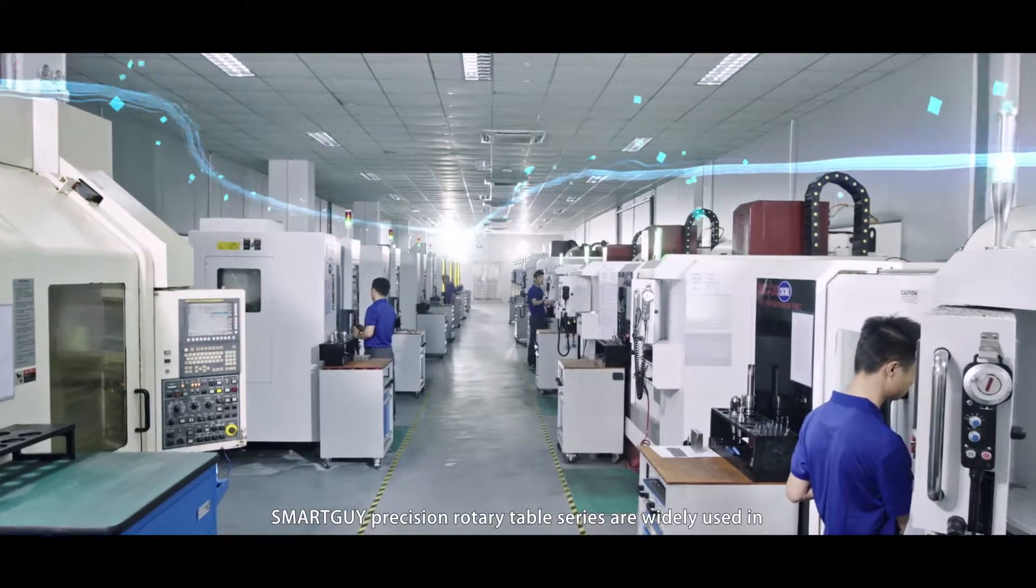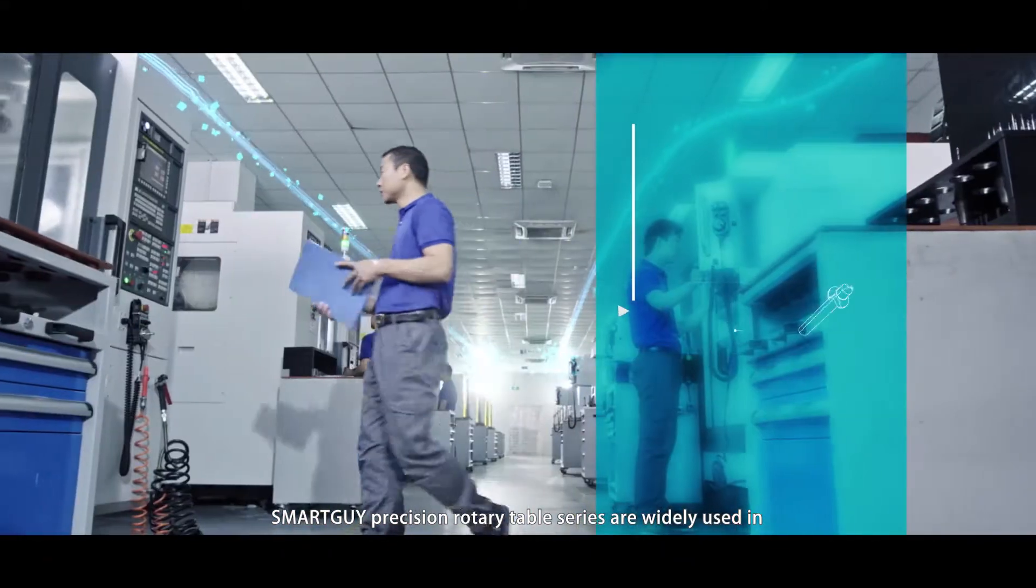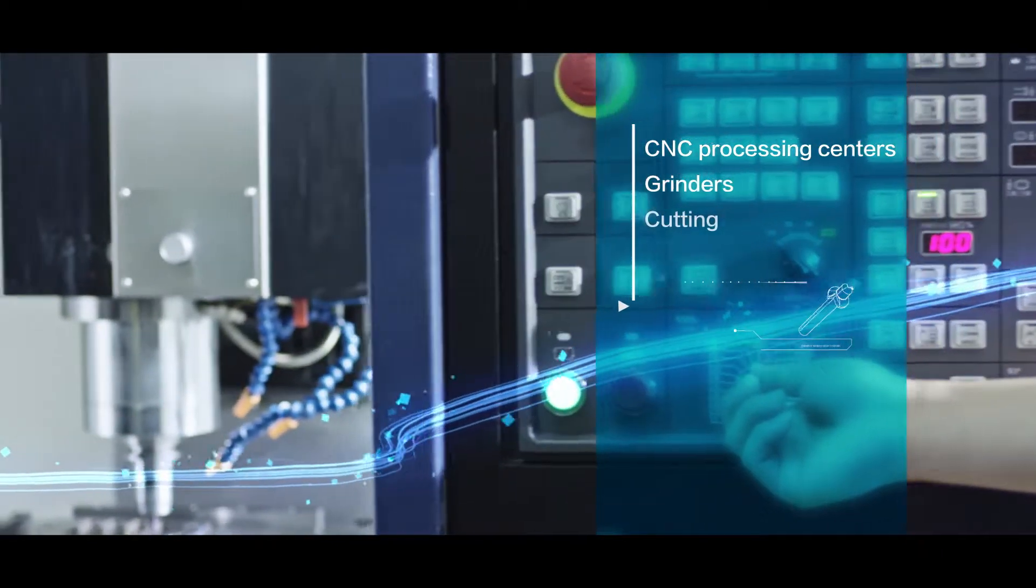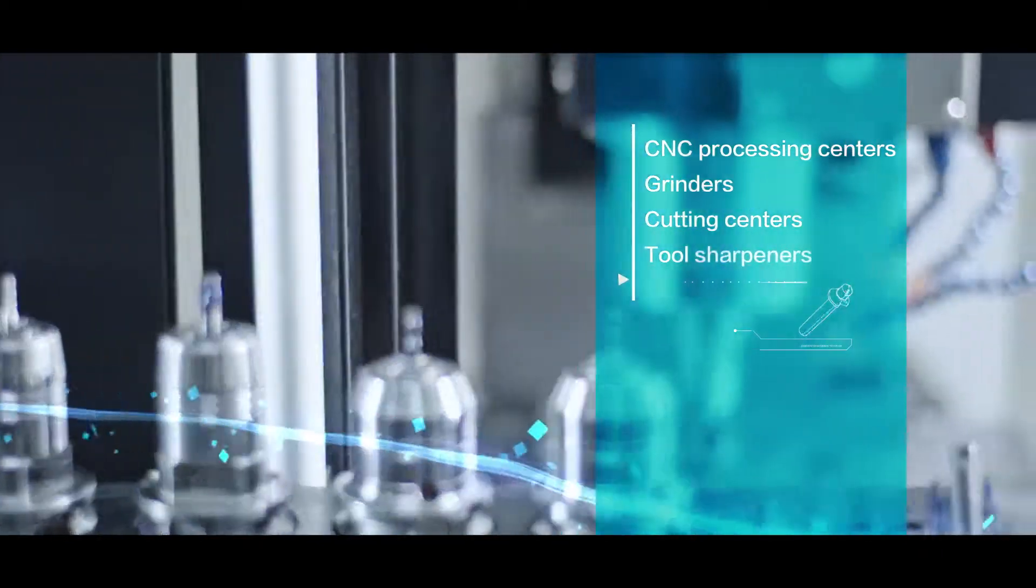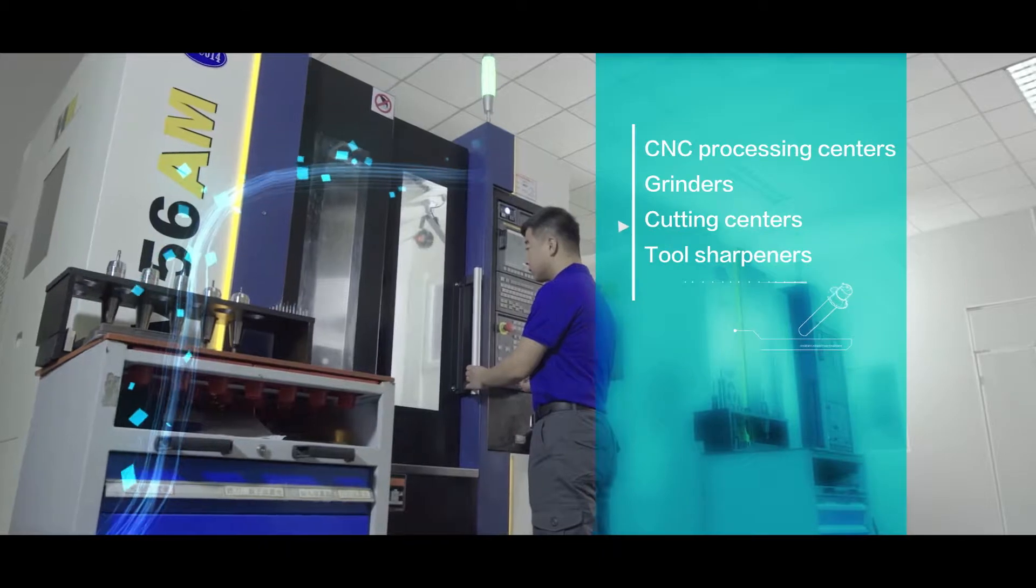SmartGuy Precision Rotary Table Series are widely used in CNC processing centers, grinders, cutting centers, tool sharpeners, and other fields.